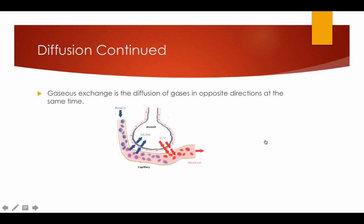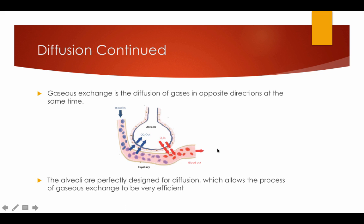Diffusion continued. Gaseous exchange is the diffusion of gases in opposite directions at the same time. Hopefully you can see that as the carbon dioxide is coming down, it's diffusing through the walls of the capillaries — because they are only one cell thick — into the alveoli and back out to the lungs. At the same time, the oxygen comes in through the capillaries, diffuses through the capillaries, and off to the working muscles. The alveoli are perfectly designed for diffusion, which allows the process of gaseous exchange to be very efficient.